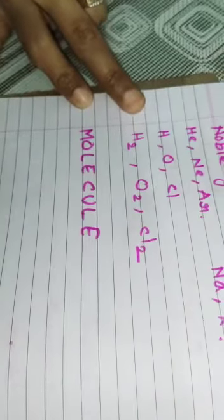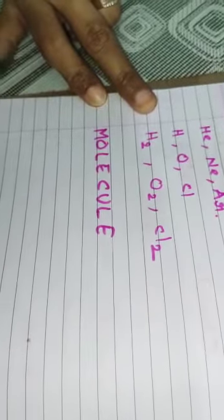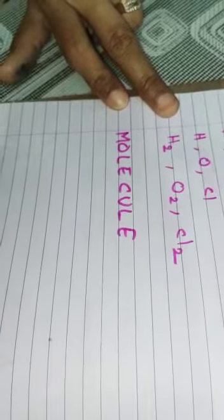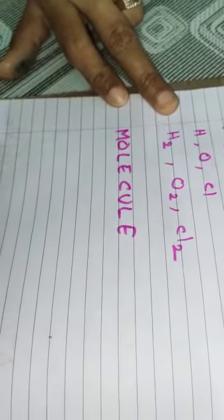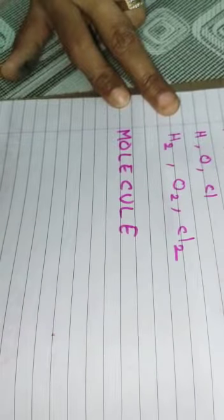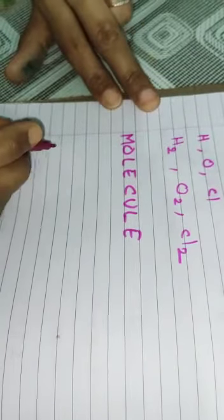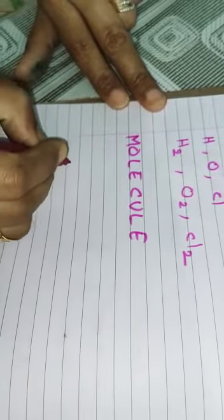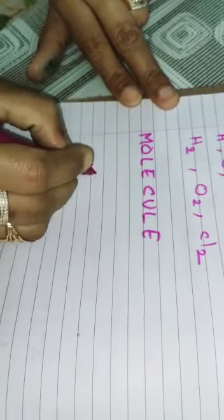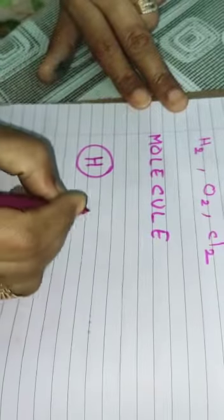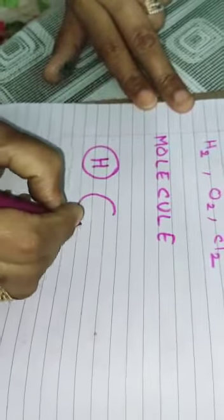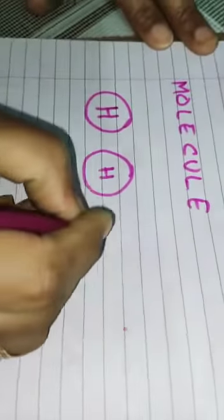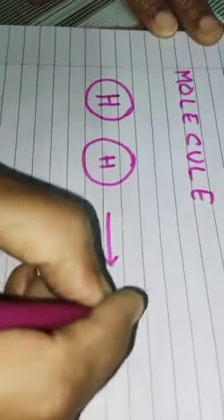But non-metals like hydrogen, oxygen, chlorine, they cannot exist alone. They combine with other atoms to form a molecule. So let us see how they combine. This is the atom of hydrogen. It combines with other atom of hydrogen to form a molecule.